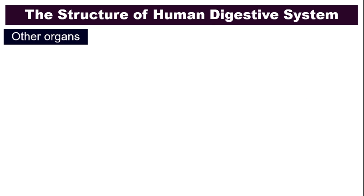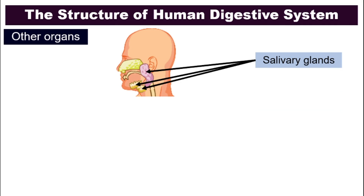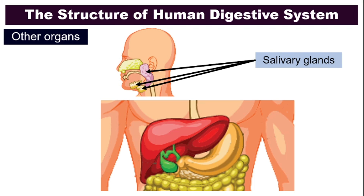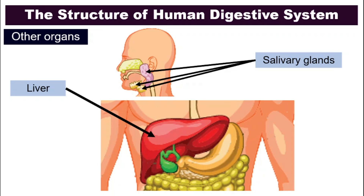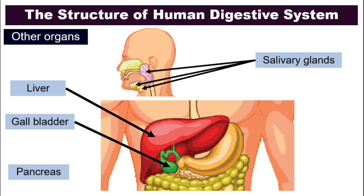Other than all these organs in the digestive tract, digestion also involves other organs such as the salivary glands — food does not go in there, but they are involved in digestion. A few other organs involved in digestion are the liver — our food does not go into the liver, but the liver helps in digestion — as well as the gallbladder and the pancreas. Let's look at what happens in each organ one by one.